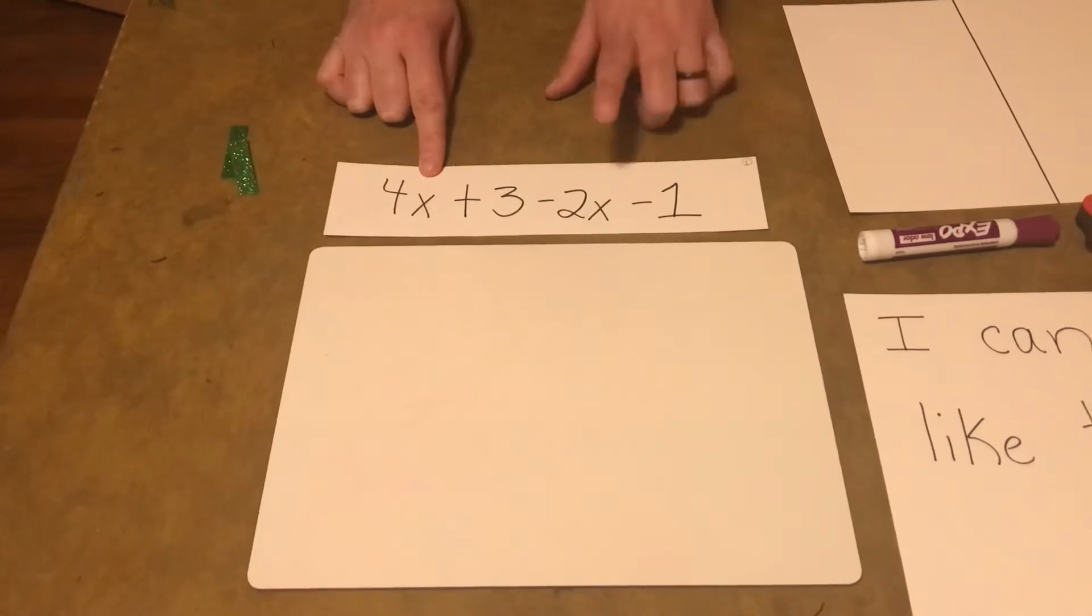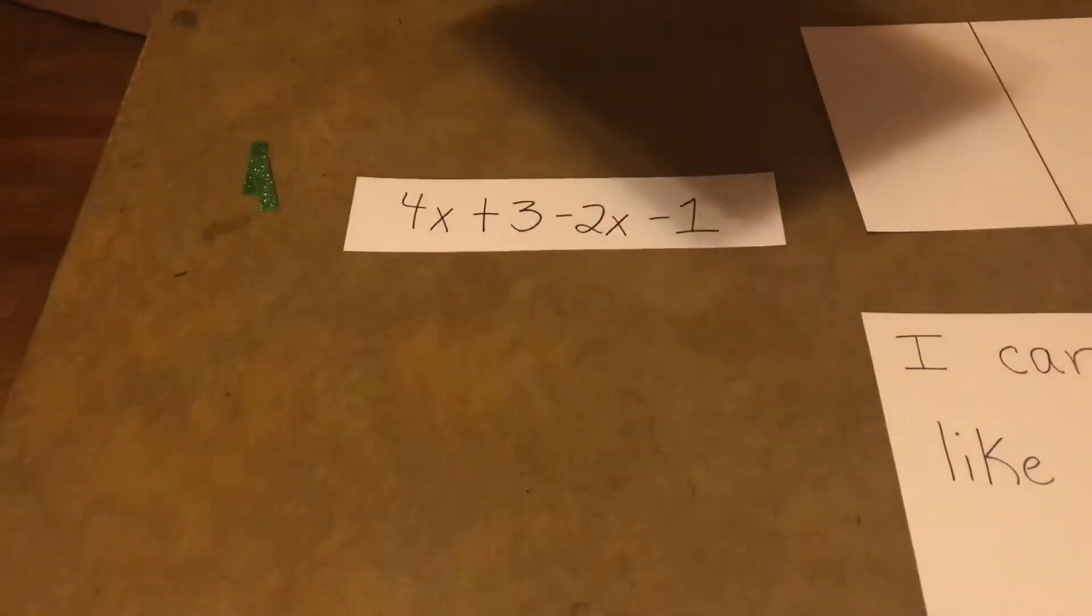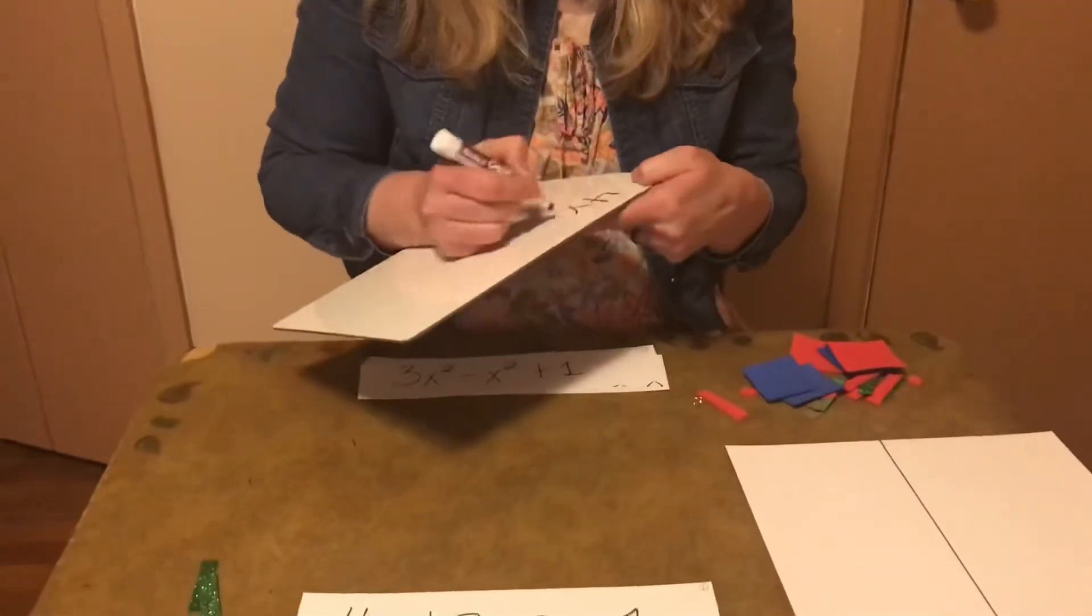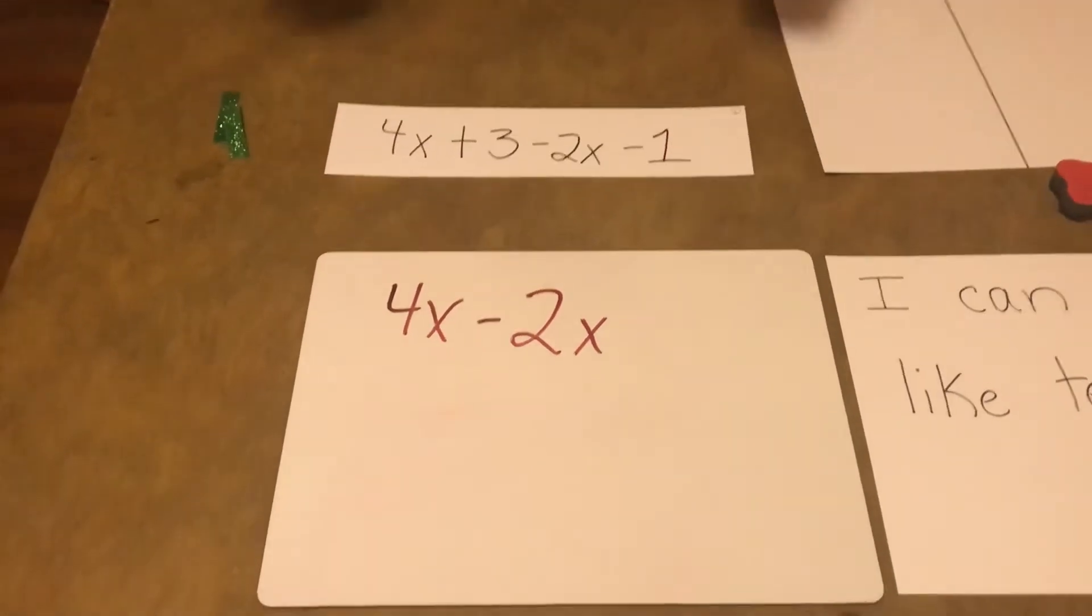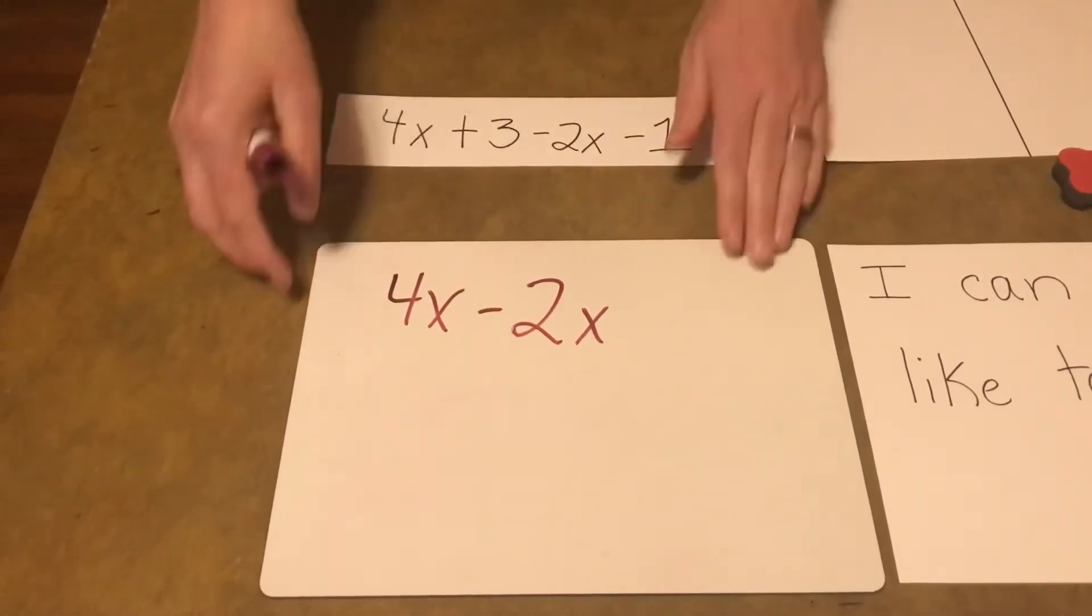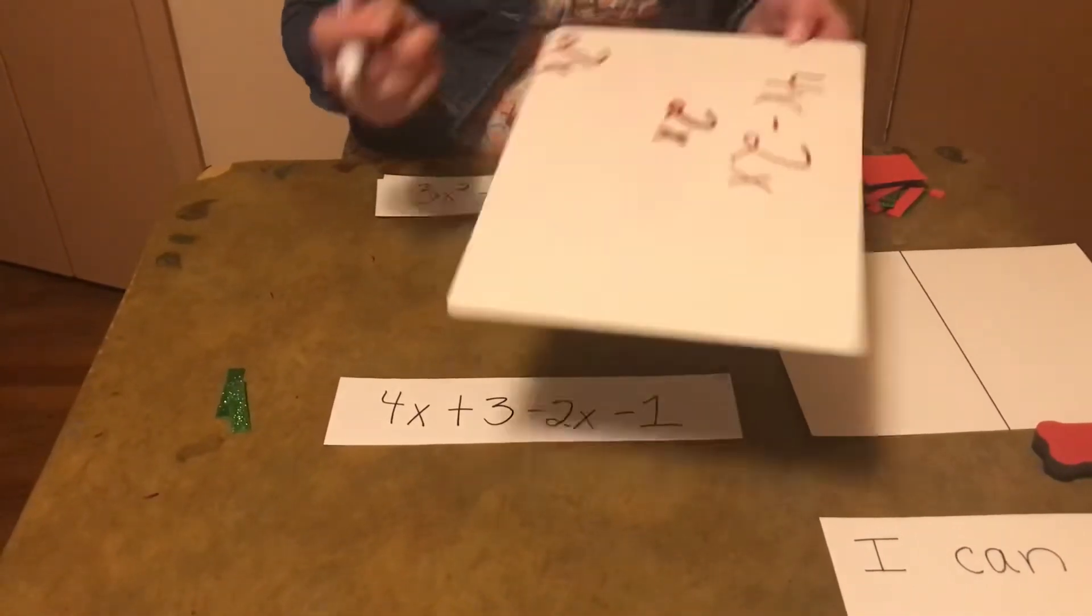So I see a 4X. Do you see another X? Oh yeah, the 2X. But it's negative. So let's write it here. So we're combining 4X minus 2X. Well, we can think of that as 4 apples minus 2 apples. And if we had 4 apples minus 2 apples, it would be 2 apples, right? But it is 2X. I'm going to track this at the bottom.